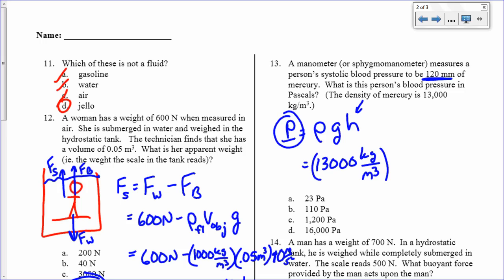Times g, which is 10 meters per second squared. Times h, which is 0.120 meters. Converting that 120 millimeters to meters. I get 130,000. It's 16,000 pascals. So, the answer is D.